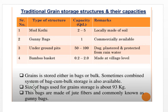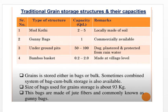Sometimes a combined system of bag and bulk storage is also used. The size of bags used for grain storage is about 93 kg. These bags are made of jute fibers and are commonly known as gunny bags.